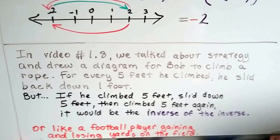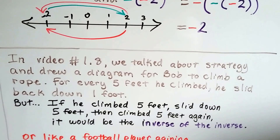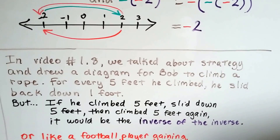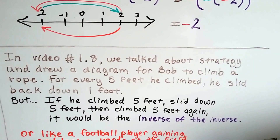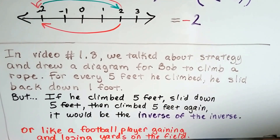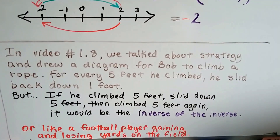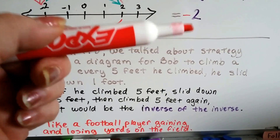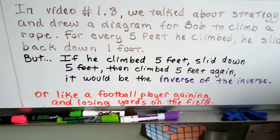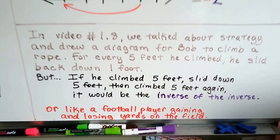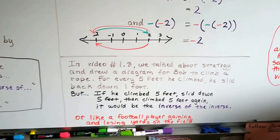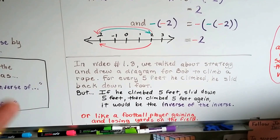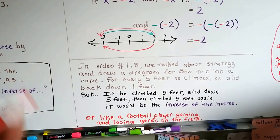In video 1.8, we talked about strategy and drew a diagram for Bob climbing a rope, where for every 5 feet he climbed he slid back 1 foot. But if he climbed 5 feet and slid down 5 feet and climbed 5 feet again, it would be the inverse of the inverse — he'd be back to the exact same place. It's like a football player gaining and losing yards: if a player gained 8 yards, lost 8 yards, and gained 8 yards again, they'd be back to where they first gained those 8 yards.